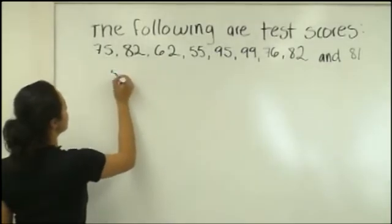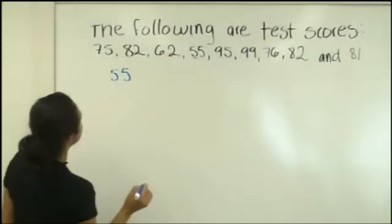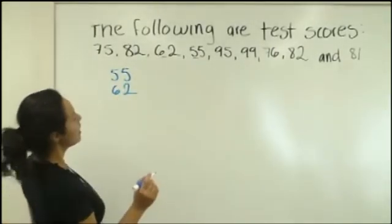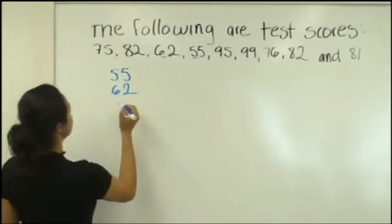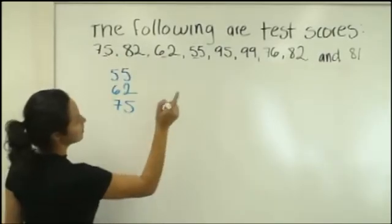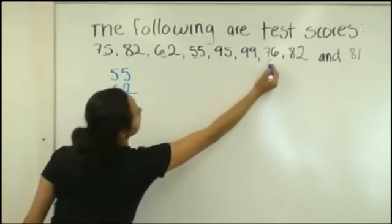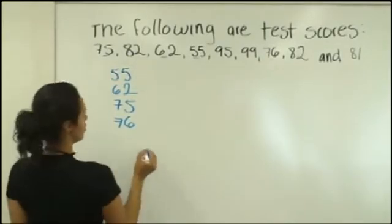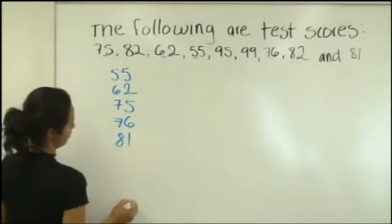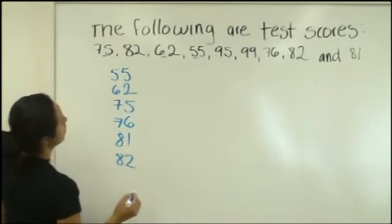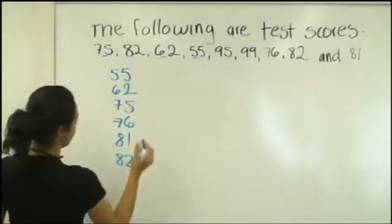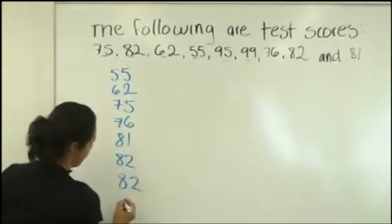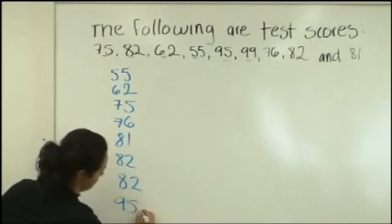So the smallest one is 55, then we go to 62, then 75, 76, then 81, then 82, and we have another 82, and 95, 96, and 99.